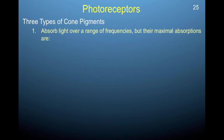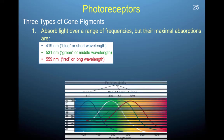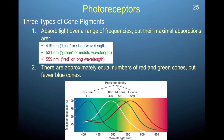There are three types of cone pigments that allow us to perceive color. They absorb light over a range of frequencies, but have maximal absorption rates at 419 nanometers (blue or short wavelength), 531 nanometers (green or middle wavelength), and 559 nanometers (red or long wavelength). You can see these peak intensities in the spectrum here. This range of responsiveness — not just one peak but surrounding wavelengths too — enables us to see finer nuances of color. There are approximately equal numbers of red and green cones, but fewer blue cones.